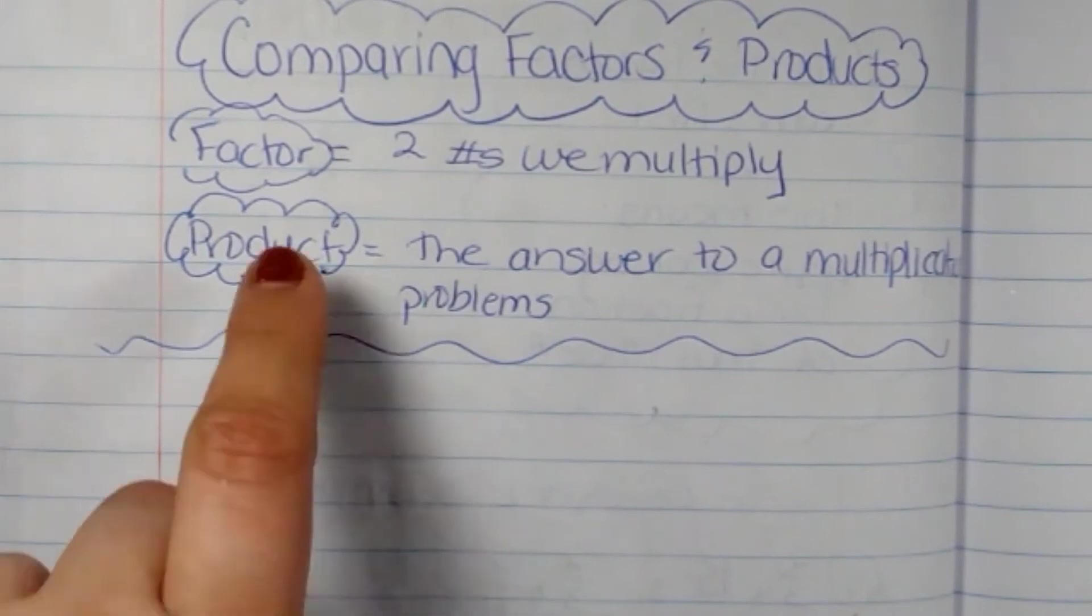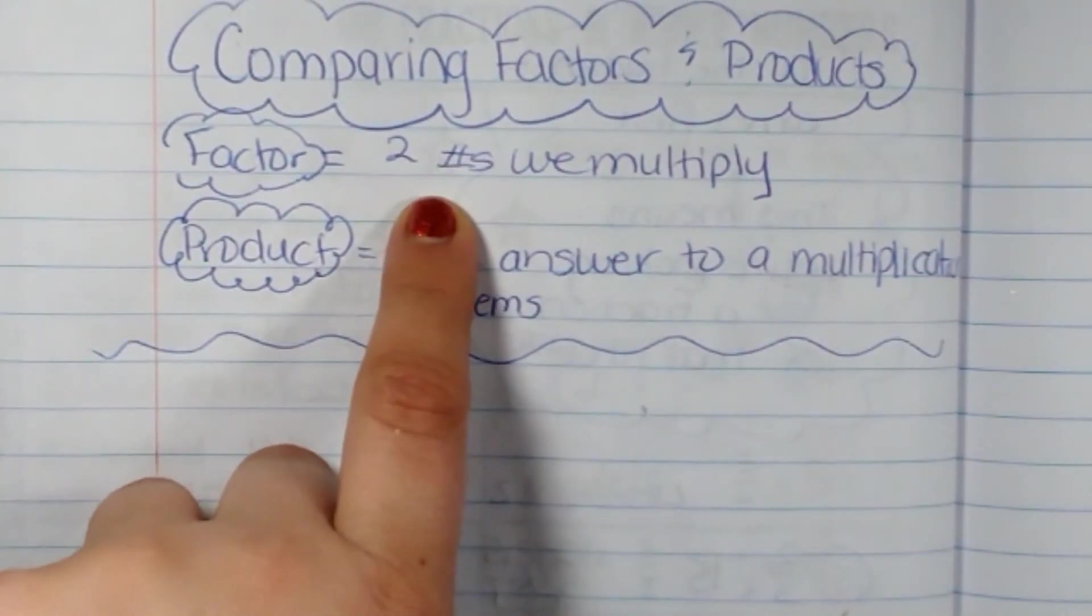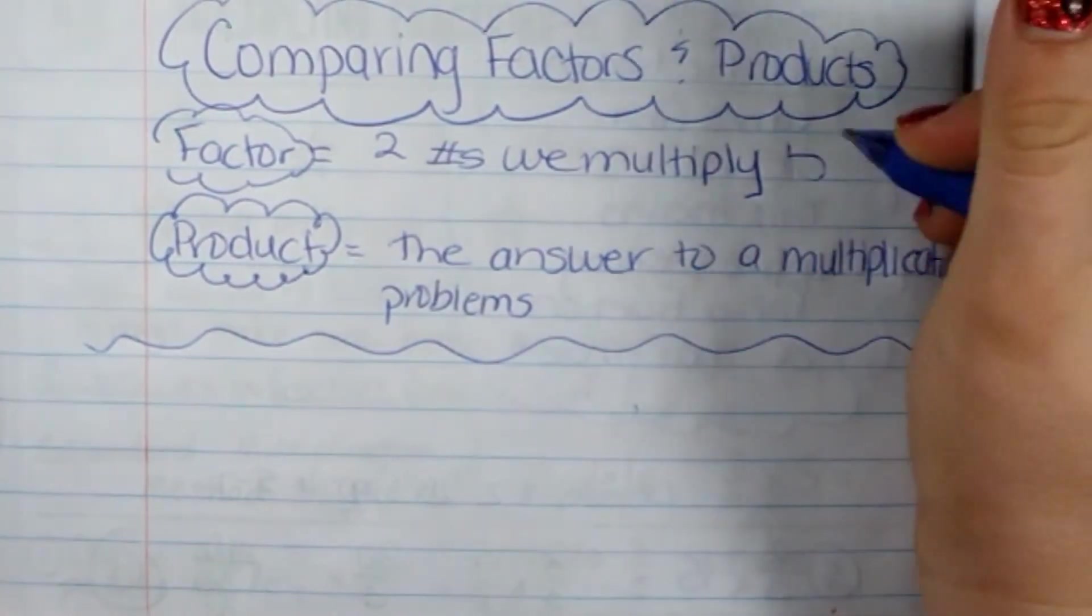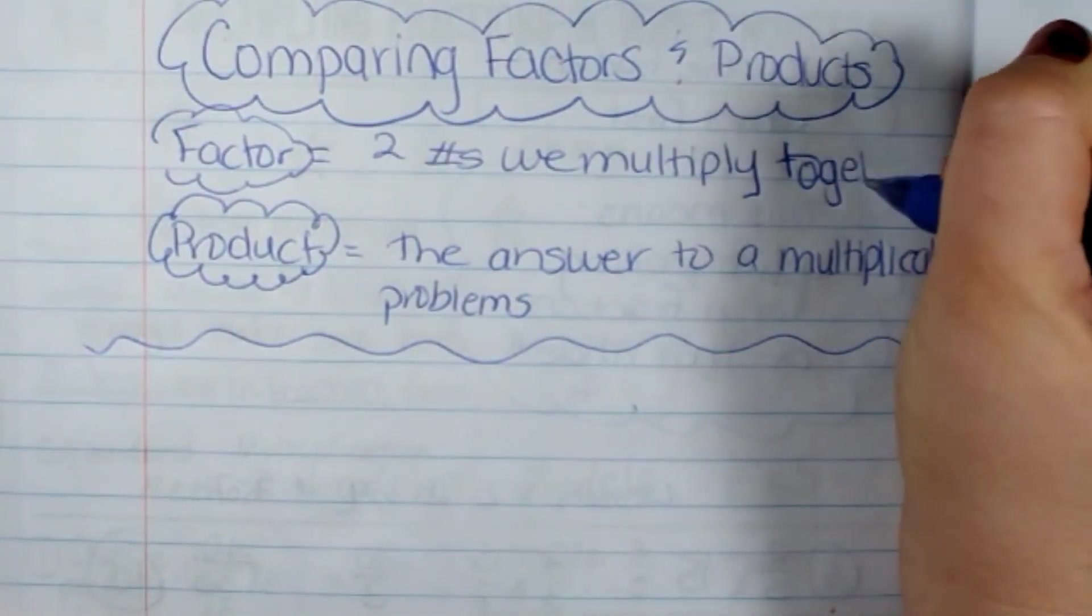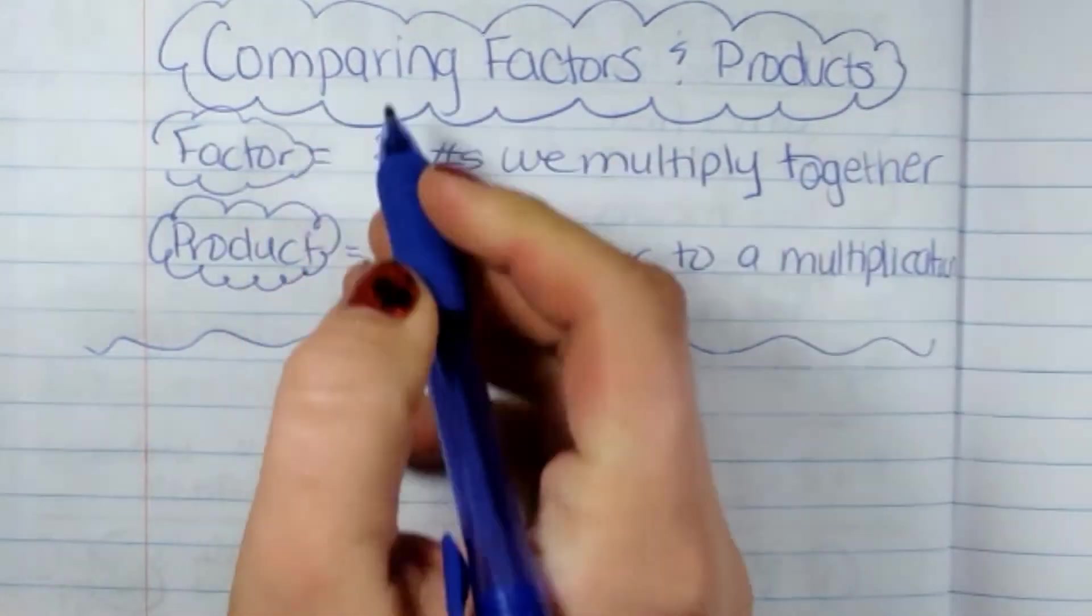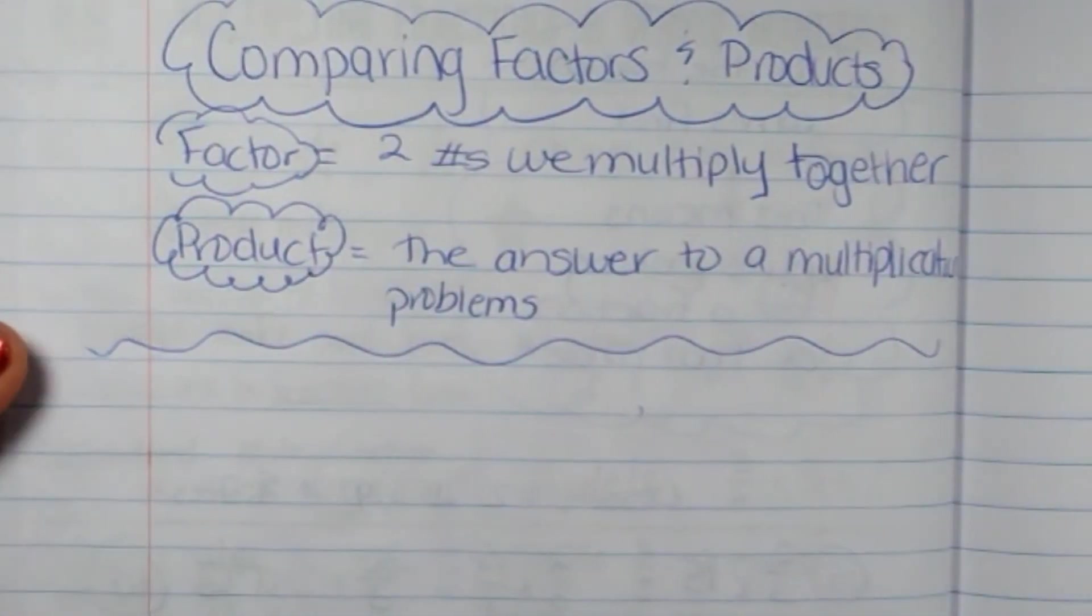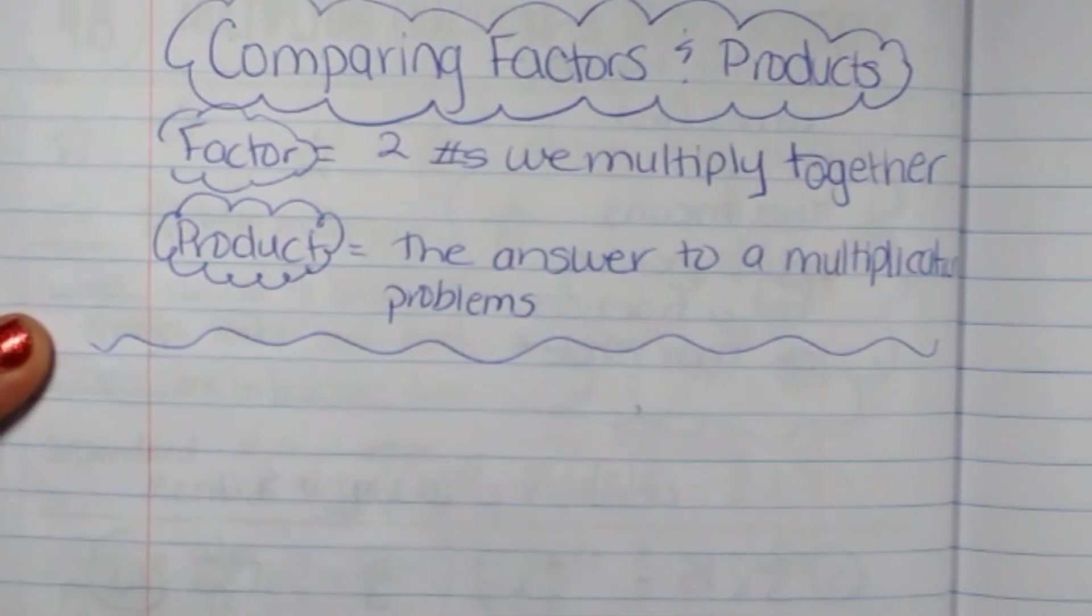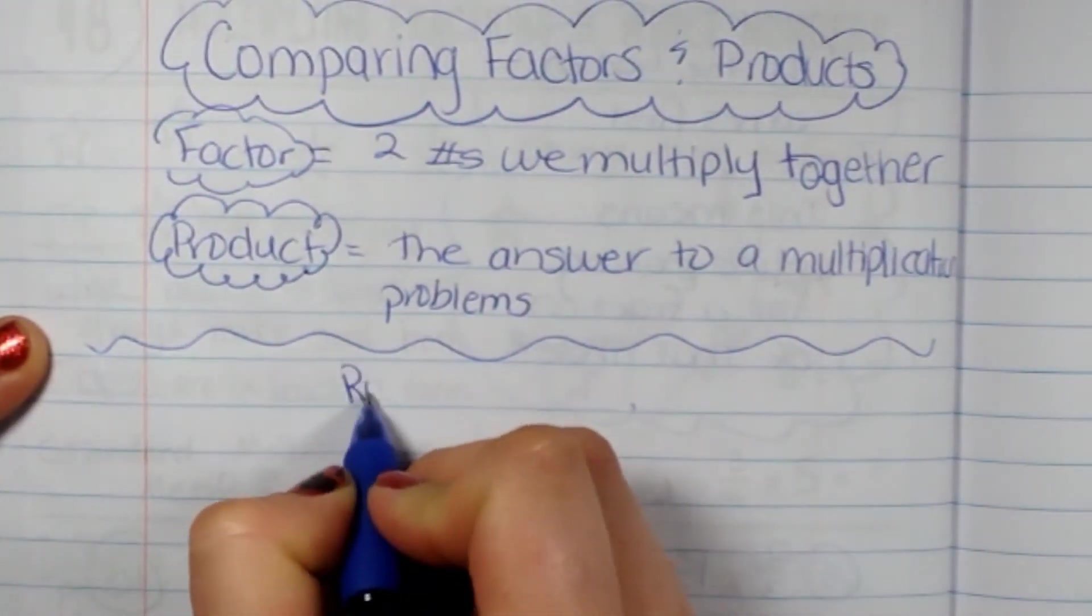So we have our factors are two numbers that we multiply together and our products are the answers to the multiplication problem. So these are the two words that we're going to be comparing in this lesson. So here are some rules to follow.